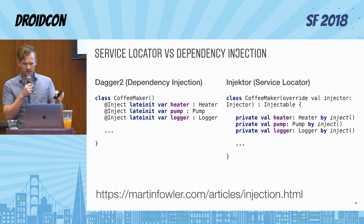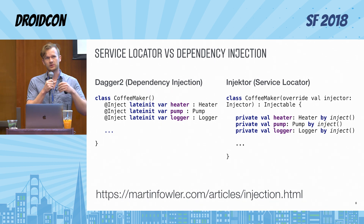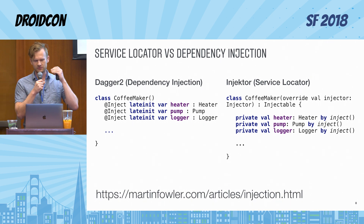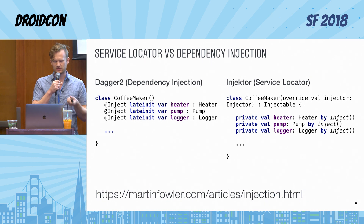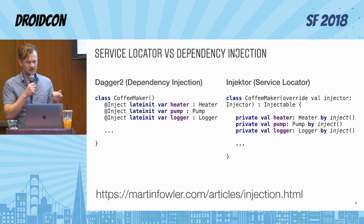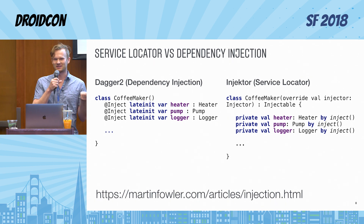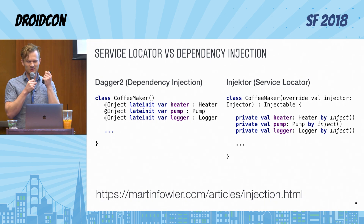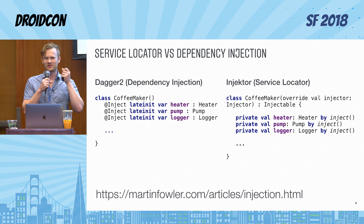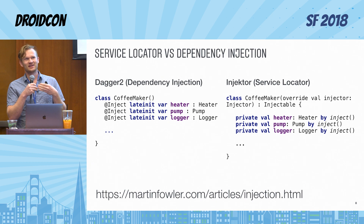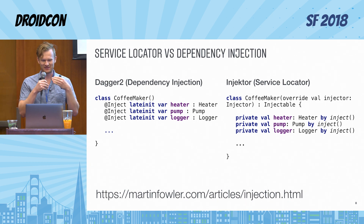The big difference between service locator and pure dependency injection is that with dependency injection, injected classes don't have a reference to the injector. While with service locator, injected classes have a reference to the service locator. This is a pretty hot topic of debate in the Java and Kotlin community. I strongly recommend you read a very old article by Martin Fowler — written more than 10 years ago and still relevant — to get an educated opinion on the subject.